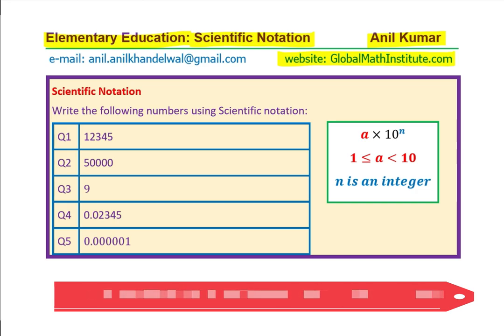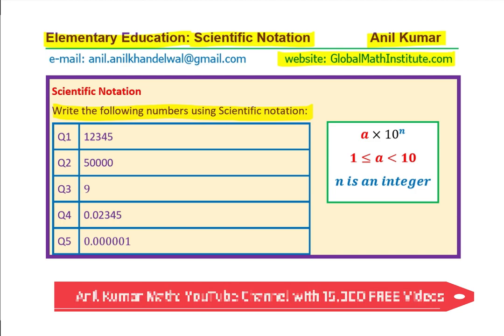Here are a few questions for you which we are going to answer. You can see the five questions here. You need to write the following numbers using scientific notation. Scientific notation, as you know, is written as a times 10 to the power of n, where a is a number which is greater than or equal to 1 but less than 10.